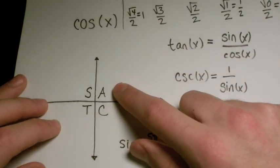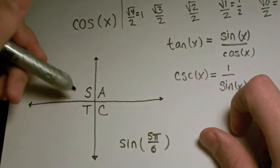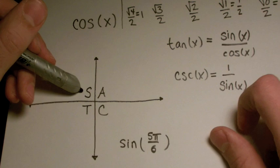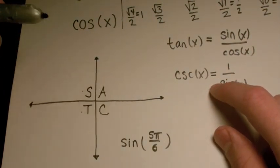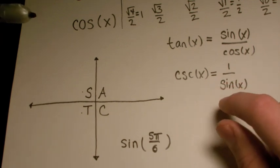And we know that in quadrant 1, all trig functions are positive. In quadrant 2, only sine and obviously cosecant are positive. In quadrant 3, tangent and cotangent are positive. And in quadrant 4, cosine and secant are positive.